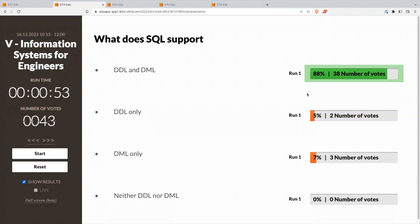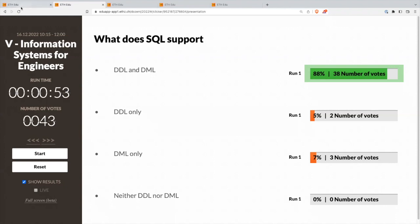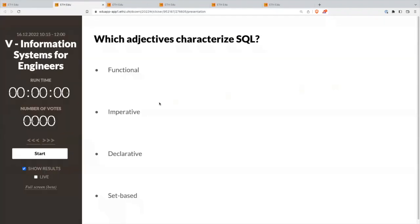What are the numbers now? So, we have 12 and here, 1, 2, 3, 4, 5, 6, 7, 8, 9, 10. So, we are at 22. 22 still in the game. Which adjectives characterize SQL? Functional, imperative, declarative, set-based. Is multiple answers possible? All the correct answers. Functional, imperative, declarative, set-based. Which adjectives characterize SQL? It takes more time this time.